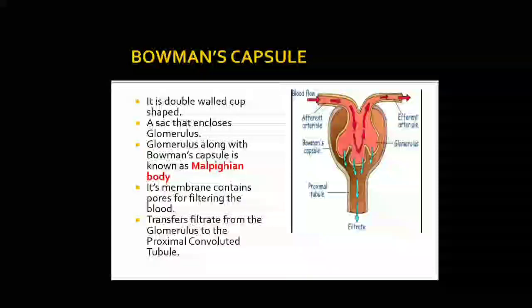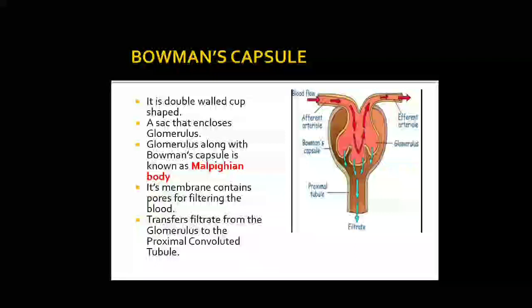Now, what is the glomerulus? The blood is coming from the renal artery. When blood is pumped from the ventricle, it comes through the aorta. This aorta divides into a number of arteries. The artery which supplies blood to the kidney is known as the renal artery. This renal artery divides into different arterioles which enter different nephrons. The arterioles which supply blood to and enter the nephron are known as afferent arterioles, and then they divide into capillaries which supply the Bowman's capsule.